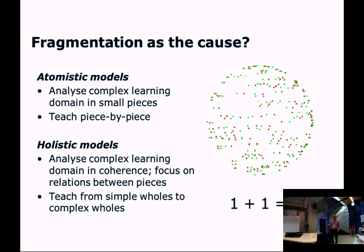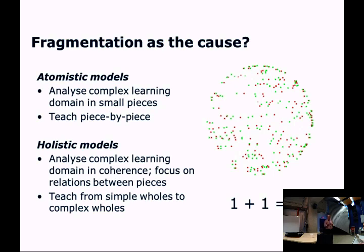Suppose I'm describing this figure here. When I would do this in an atomistic way, I would describe each red dot and how it moves across the screen. I could do the same for all the green dots. And after I've described all the dots, I could say, 'Now you know everything about this domain.' My claim is that when I approach teaching like this, you will still have no idea what I'm talking about.